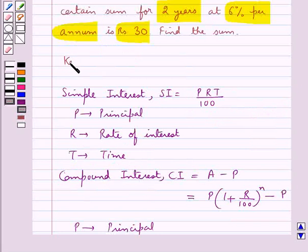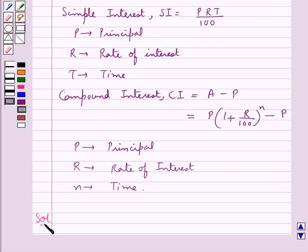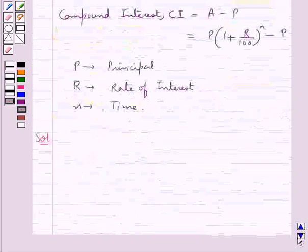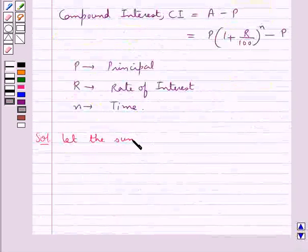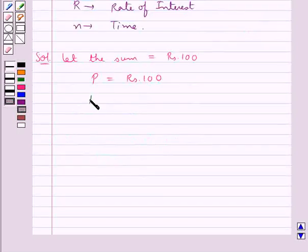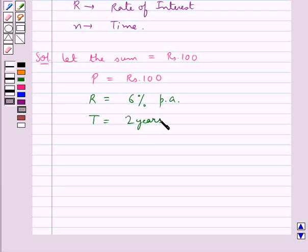This is the key idea to be used for this question. Now we proceed with the solution. We need to find the sum, so we assume the sum to be Rs. 100, that is principal P = Rs. 100. We are given the rate of interest R = 6% per annum and time T = N = 2 years.